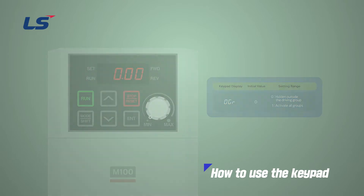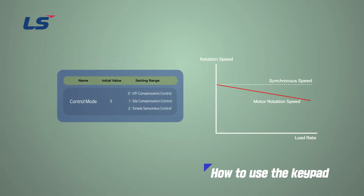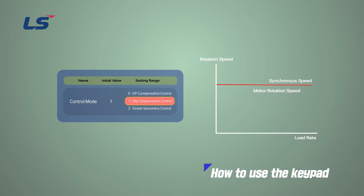In addition, M100 has the feature that the default control mode in the drive group is set to Slip Compensation Control. Slip Compensation means that the difference between the rotation speed and the set frequency of an induction motor increases according to the load factor.